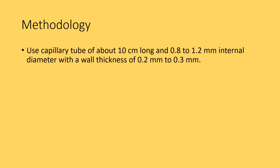Let us see the methodology. Use a capillary tube of about 10 cm long with 0.8 to 1.2 mm internal diameter and a wall thickness of 0.2 to 0.3 mm. The diameter and wall thickness are very important and have significant impact on test results. If you cannot measure these dimensions at your laboratory, ask your supplier to provide this information so you can check for compliance.